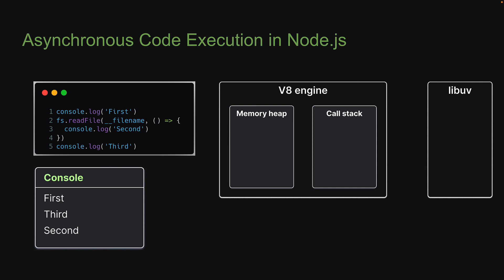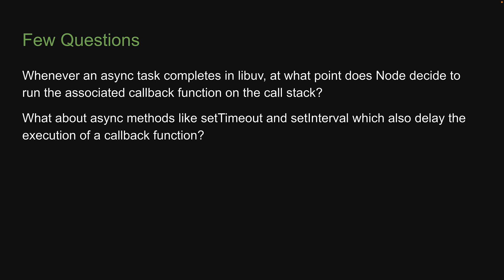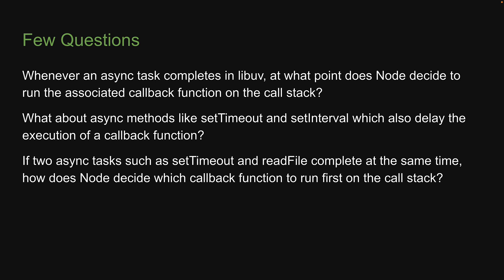Now, if you have understood this far, let me ask you a few questions. Whenever an async task completes in libUV, at what point does Node decide to run the associated callback function on the call stack? Does it wait for the call stack to be empty, or does it interrupt the normal flow of execution to run the callback function? What about async methods like setTimeout and setInterval, which also delay the execution of a callback function? If two async tasks such as setTimeout and fs.readFile complete at the same time, how does Node decide which callback function to run first on the call stack? Does one get priority over the other?